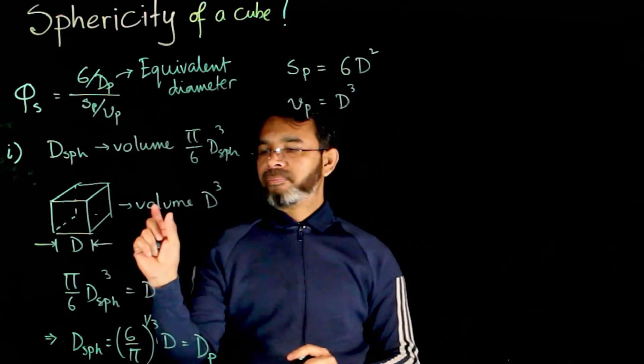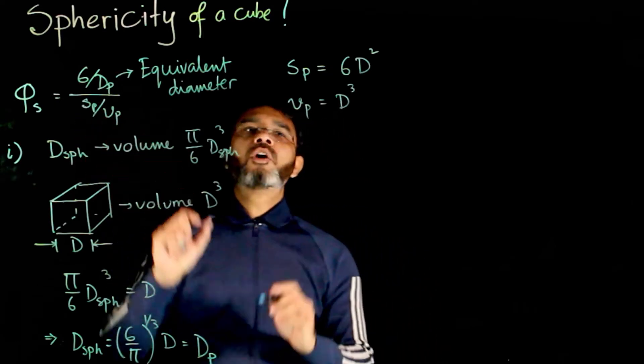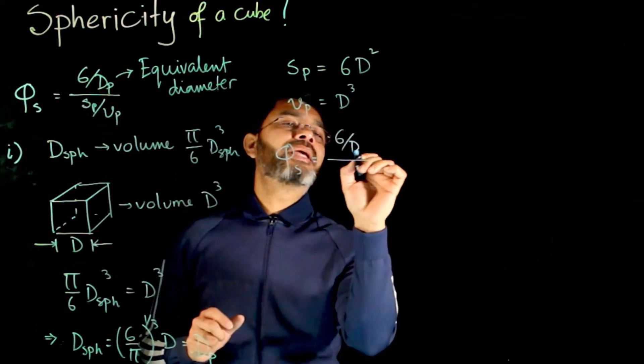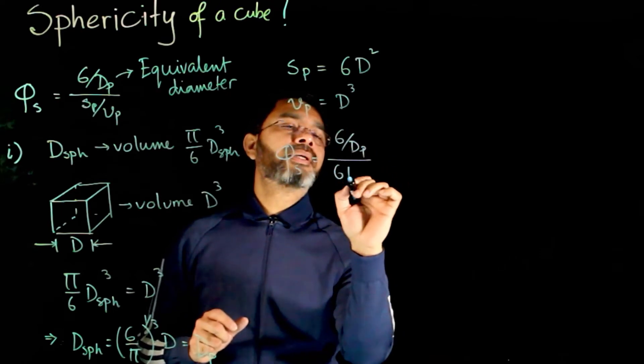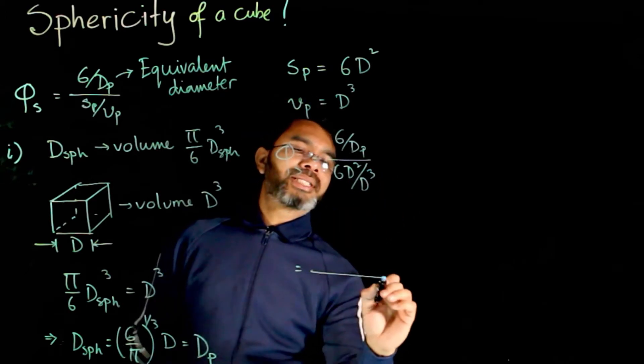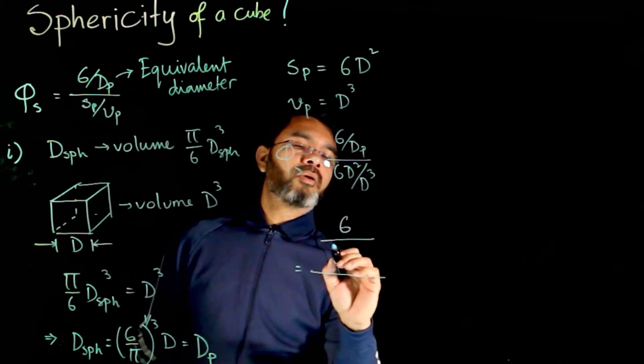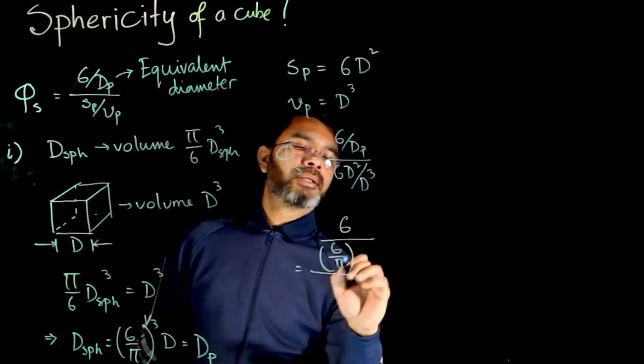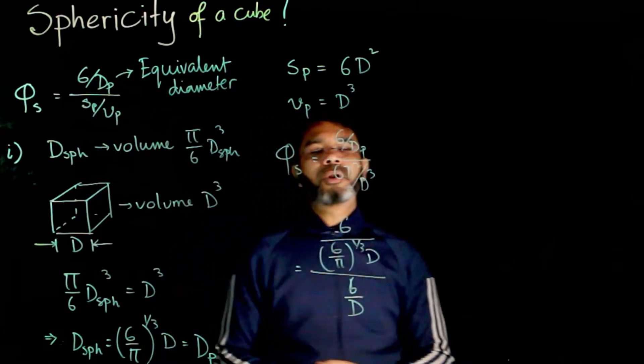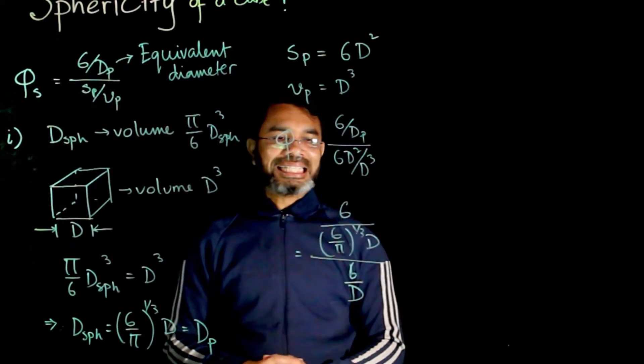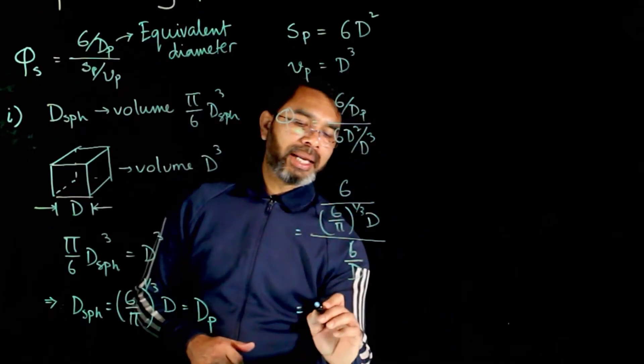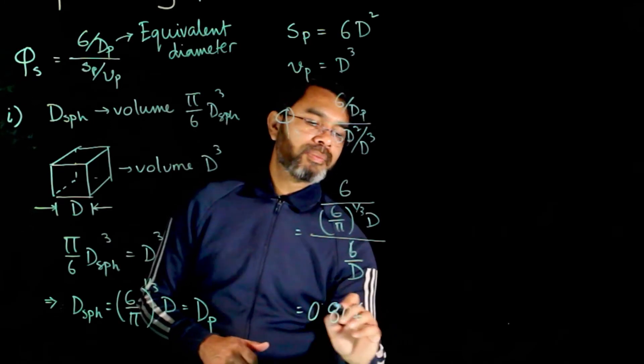All of this gives the value of sphericity to be 6 over dp times sp by vp, or 6 over 6 over pi power one third d, and the denominator will have 6 over d. You just simply do this calculation, you end up getting some value 0.806.